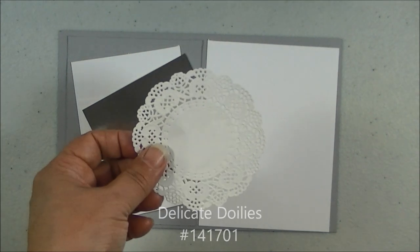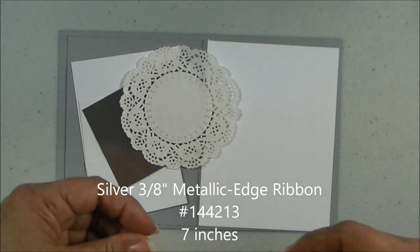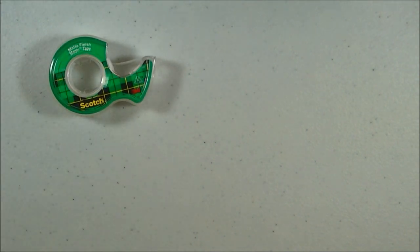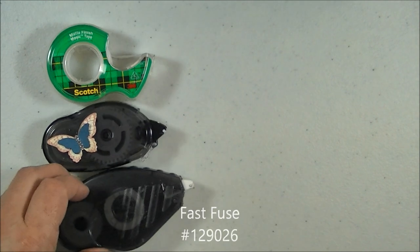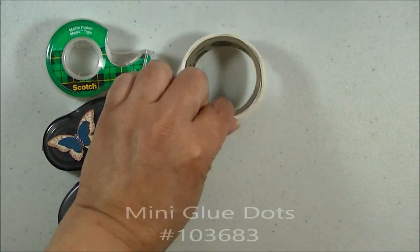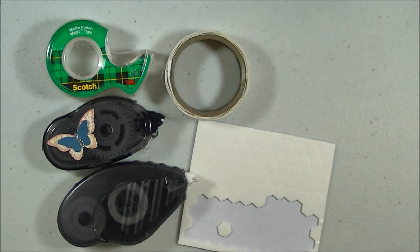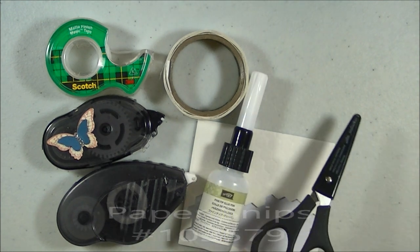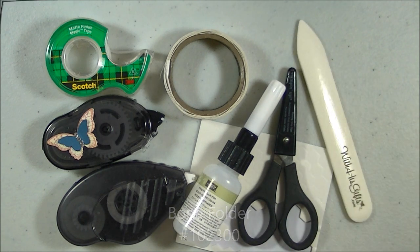I have a delicate doily and a piece of the Silver Metallic Edge Ribbon about 7 inches. Some of the other things that we will be using today are scotch tape, our Snail Adhesive, Fast Fuse, Glue Dots, Stampin' Dimensionals, fine tip glue pen, paper snips, and bone folder.